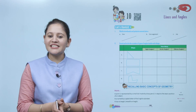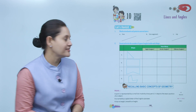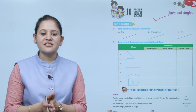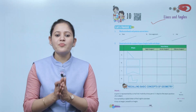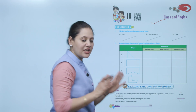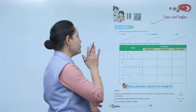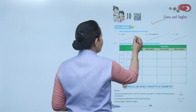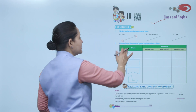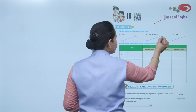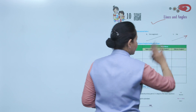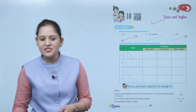Hello kids, welcome to today's math class. Today we'll do lines and angles. Let's revisit arrowhead and point. To convert into a line, as we know, a line has no end point, so both sides have arrows. A line segment has two end points, and a ray can be extended on one side — it has one end point.